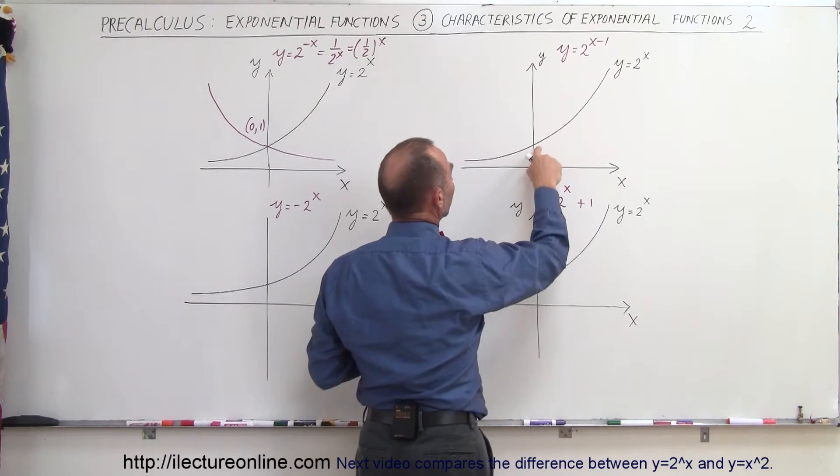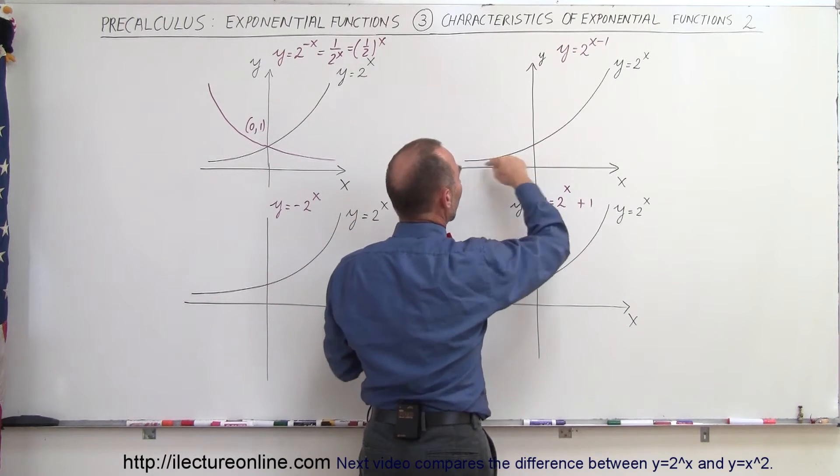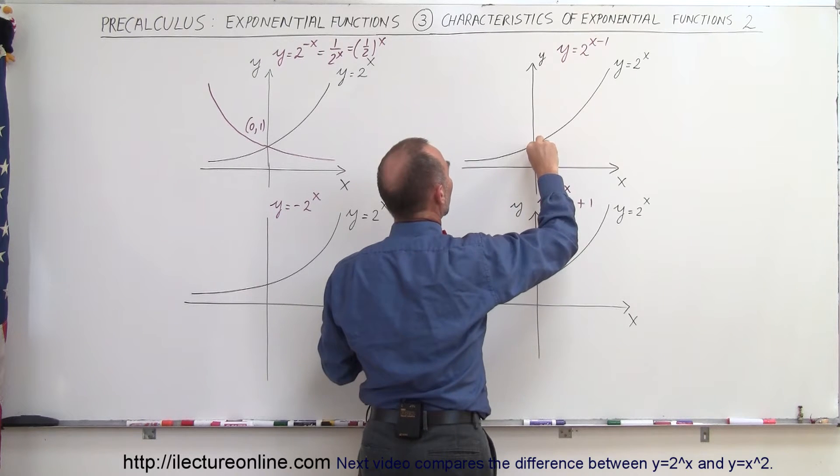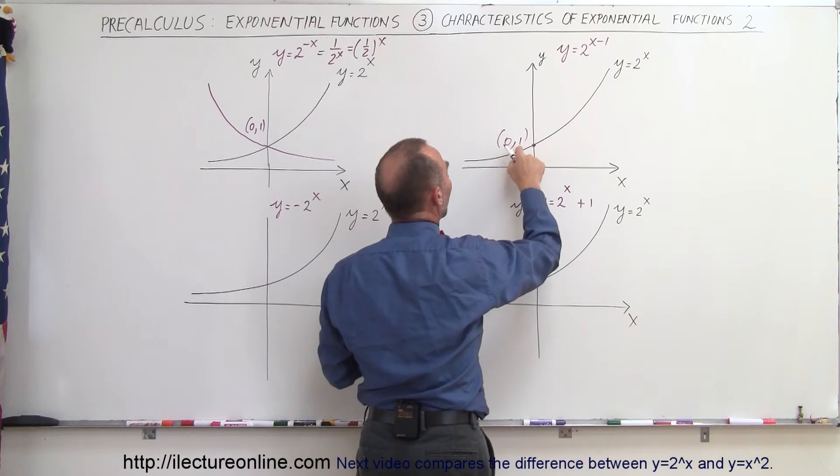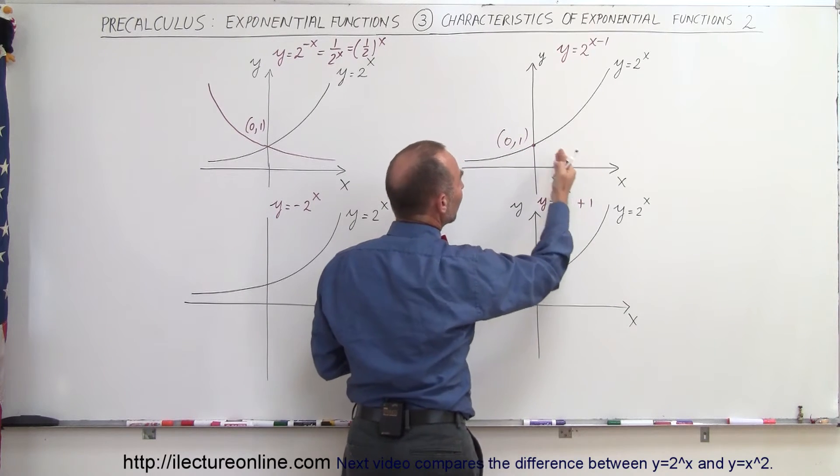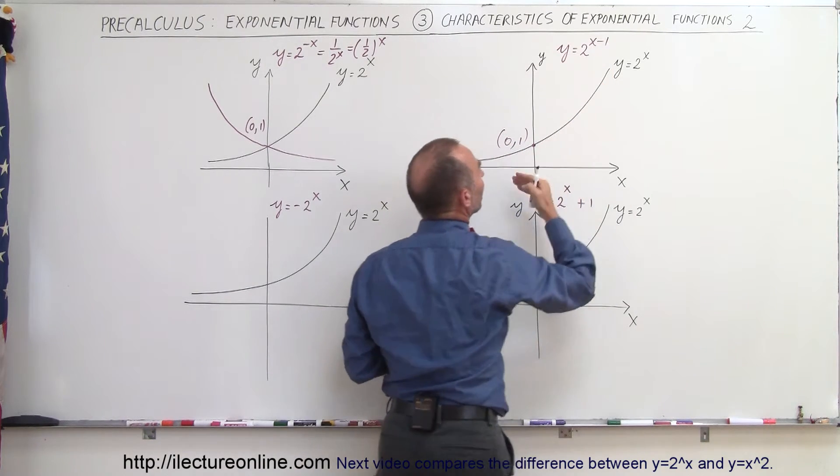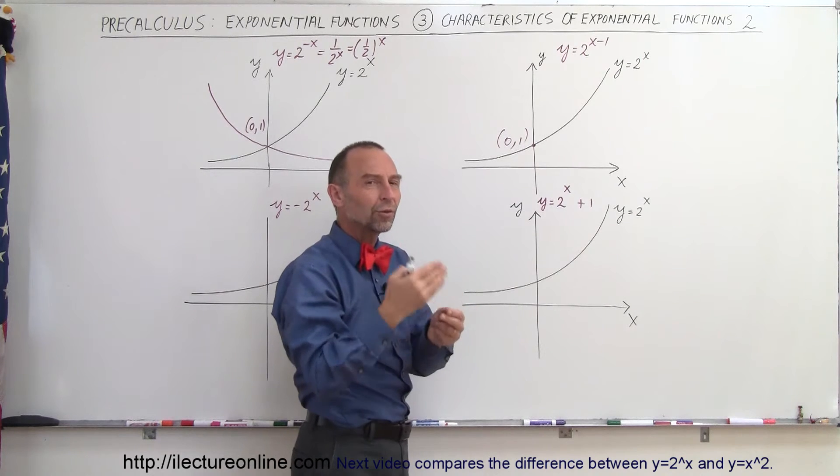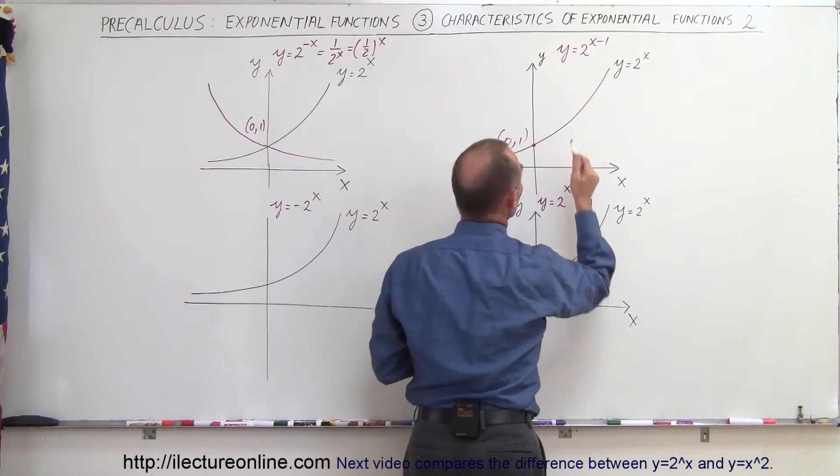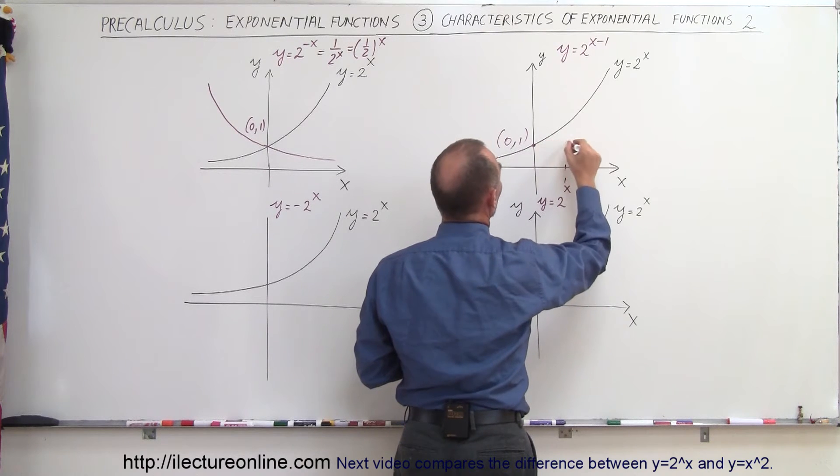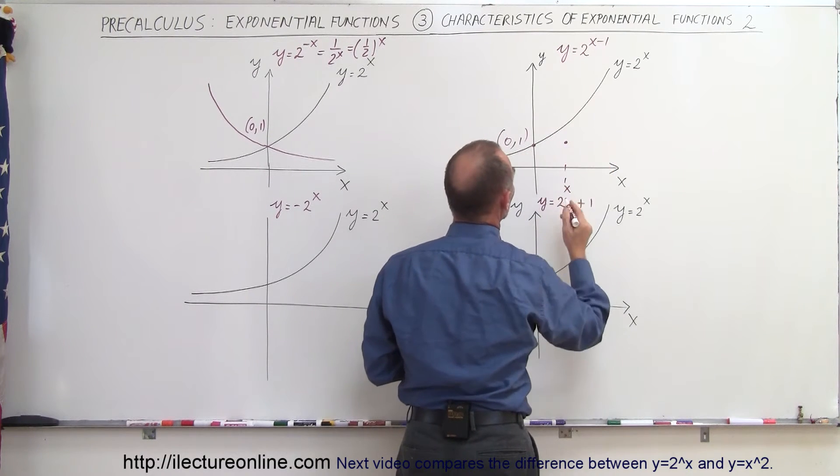So if the point right there where it crosses the y-axis is the point 0, 1, when x is equal to 0, y is equal to 1, to accomplish the same thing when we put a minus 1 in there, now x has to be 1 so when we subtract 1 from that we get 0, and that will move the function to the right. So when x is equal to 1, y will be equal to 1, moves the function to the right.